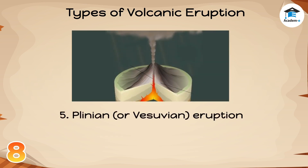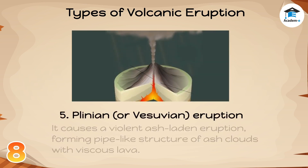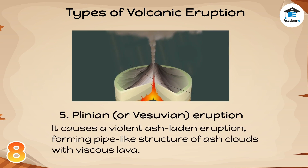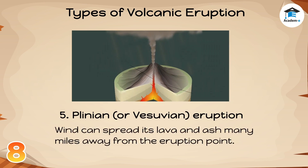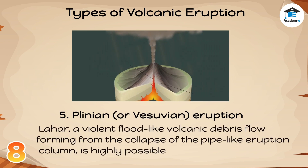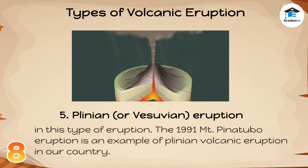5. Plinian, or Vesuvian, Eruption: It causes a violent ash-laden eruption, forming a pipe-like structure of ash clouds that reach the stratosphere. Massive viscous lava goes along with ash and gas clouds. Wind action can spread the light lava and ash many miles away from the eruption point. Lahar, a violent flood-like volcanic debris flow, is highly possible in this type of eruption. The 1991 Mount Pinatubo eruption is an example of Plinian volcanic eruption in our country.